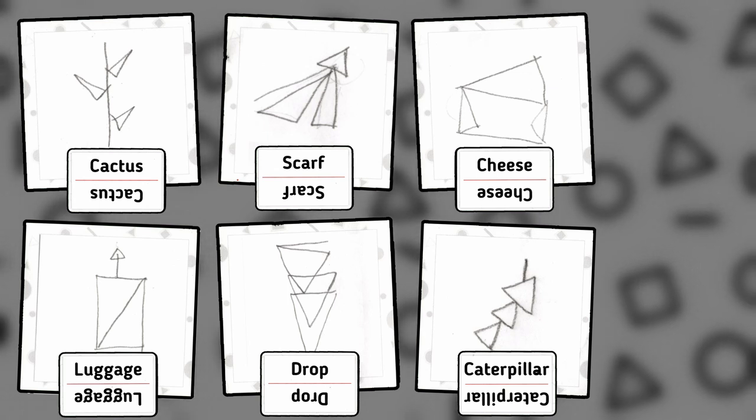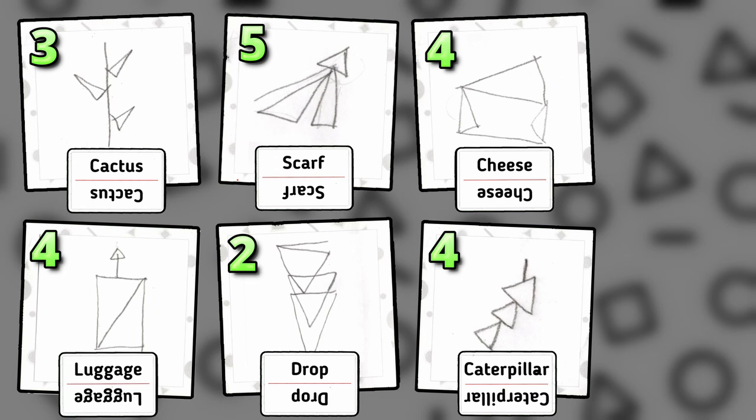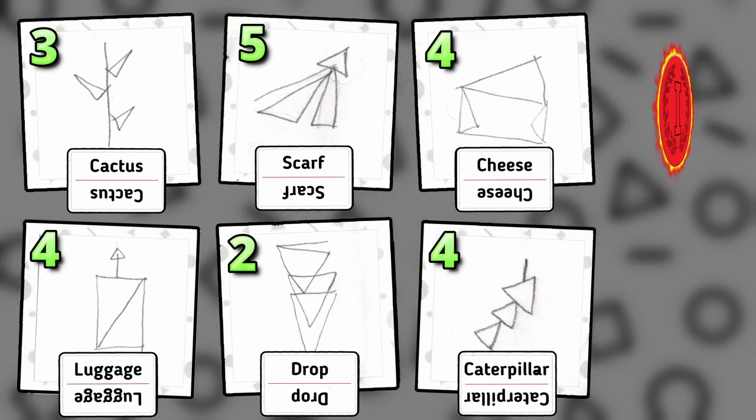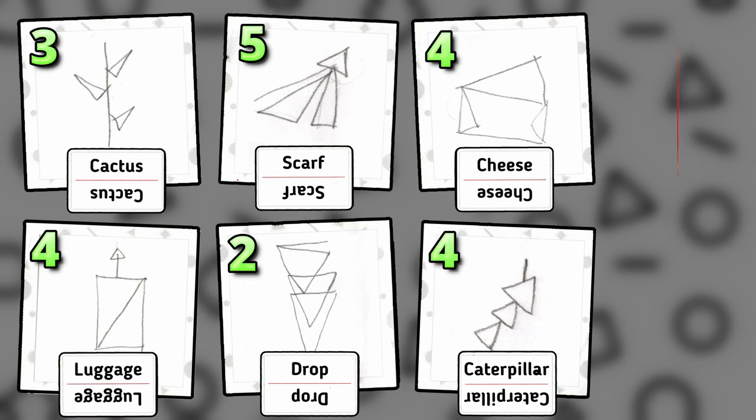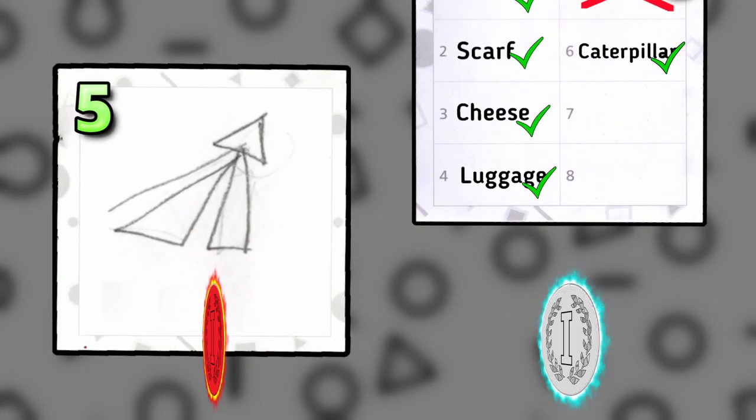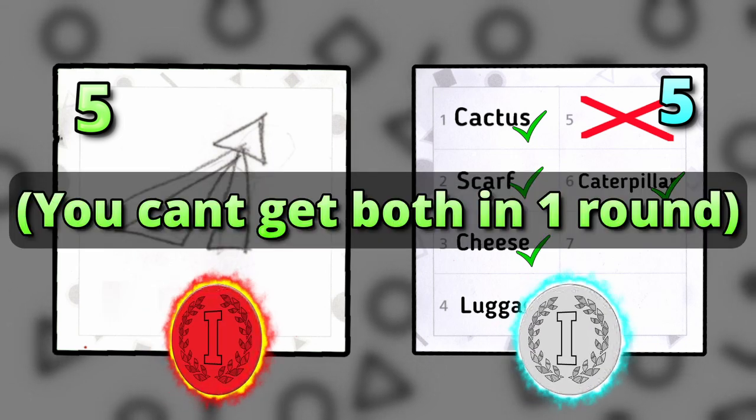Once all of the answers are revealed like this, each drawing is then scored based on how many people were able to guess it correctly. A total of two points are given out each round. One point for the drawing which has the most correct guesses, which in this case would be this one with five correct guesses, and another point for the player with the most correct answers, though a player can only get a maximum of one point per round.